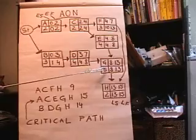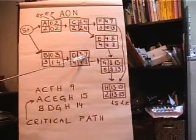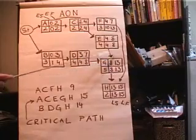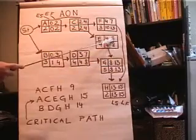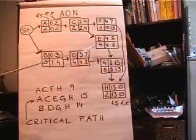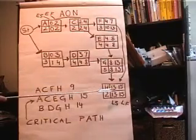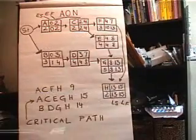It gets a bit tricky down here, for example, when we're deciding should we take the 8 or the 7 for the earliest start for activity G? Well, it turns out you take the longest, the 8 is the earliest start, because that's the earliest finish for E, and both have to be complete before we start activity G. And the same is true here, we take the 13 and not the 7 for activity H.